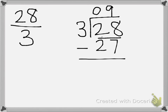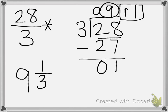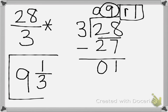We will say 28 take away 27. 8 take away 7 is 1, and 2 take away 2 is 0. So we have an answer of 9 with a remainder of 1. Our quotient 9 becomes our whole number. Our remainder of 1 is going to become our new numerator, and our denominator stays the same as it was in our fraction greater than 1, which was 3. So 28 thirds rewritten as a mixed number is 9 and 1 third.